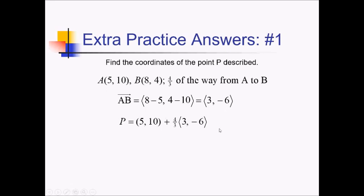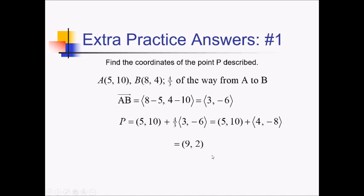So for the next step, let's actually multiply four-thirds by this vector. Four-thirds times 3 — the 3's cancel — you just end up with 4 for that piece. And then four-thirds times negative 6: negative 6 divided by 3 is negative 2, times 4 is negative 8. So all we have to do now is add the original point and this component form together. Five plus 4 gives us a new x value of 9, and then 10 plus negative 8 gives us a new y value of 2.